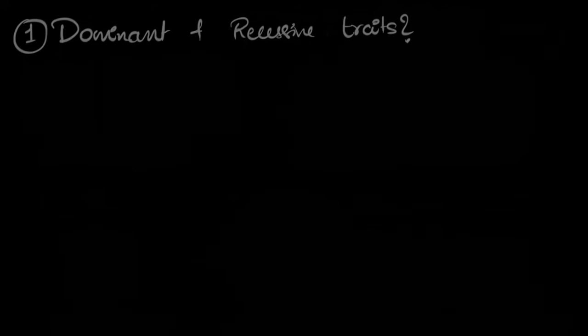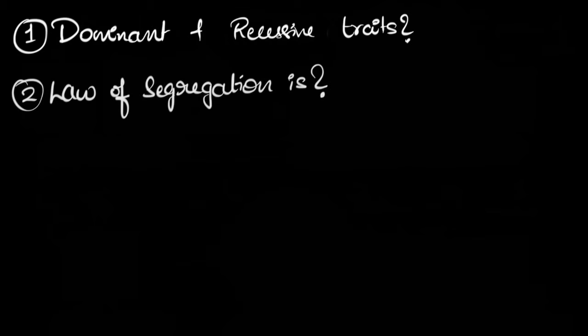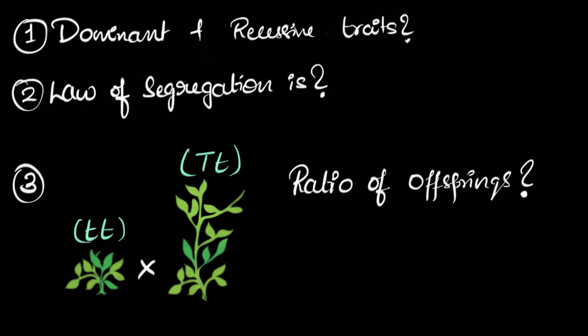Let's recall what we learned. Can you recall what dominant and recessive traits are? What the law of segregation is? And can you work out what the ratio of the offspring would be if we cross a short plant with a tall plant that has both the tall and short trait in it? If you get stuck at any point, you can always go back and re-watch that part of the video.